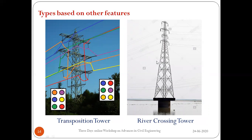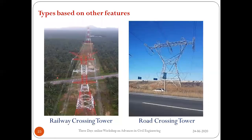River crossing towers are designed with additional height and special features. Similarly, railway crossing and road crossing towers are designed with special care. The left image shows a transmission line crossing a railway, and the other image shows a horizontal tower placed above roads.